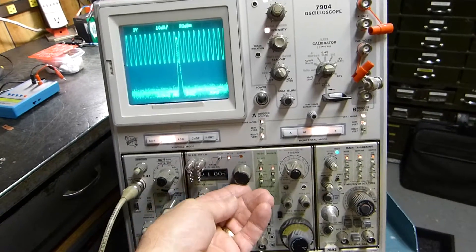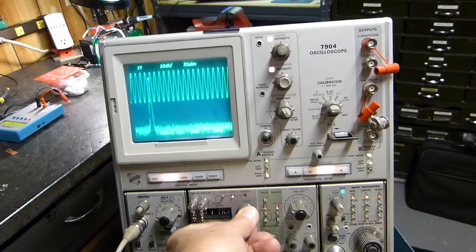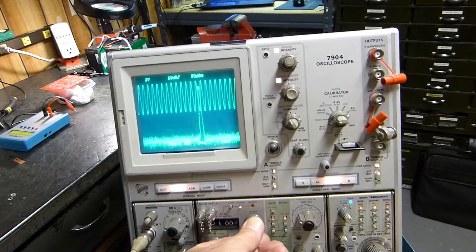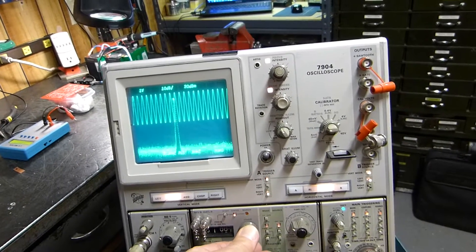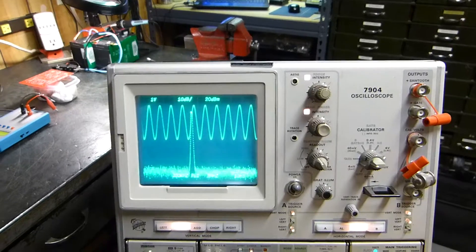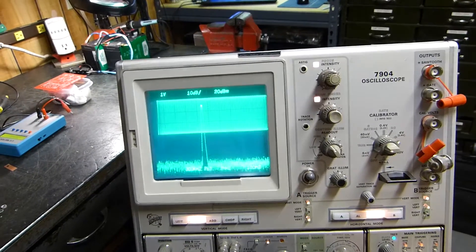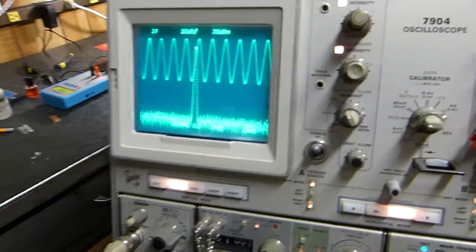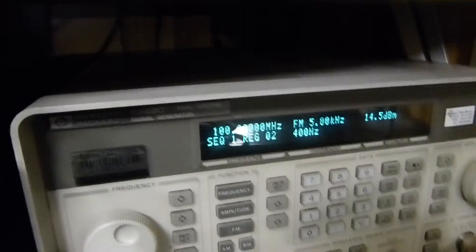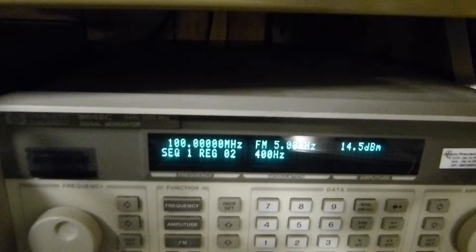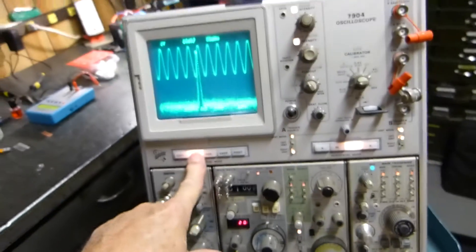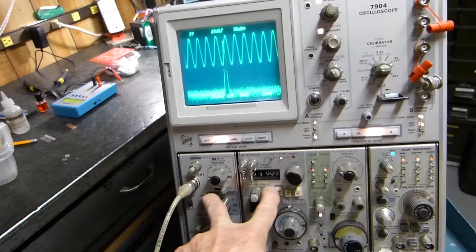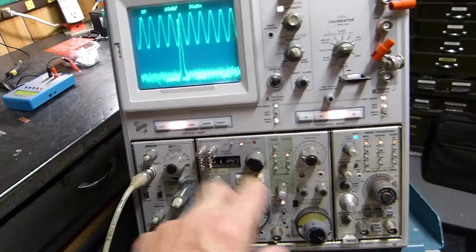This is for those that actually have a spectrum analyzer 7L5, 12, or 18 in their 7000 series scope. This is a dual base time base. But in either case, look here, what you could have here is our frequency domain spectrum analyzer and here is our oscilloscope, our time domain. I happen to be looking at a 100 megahertz signal here.